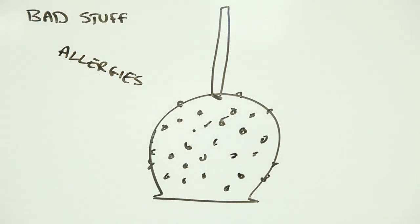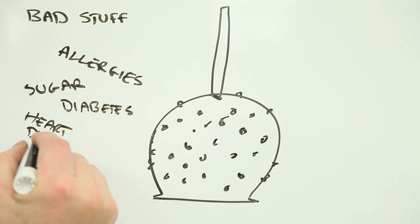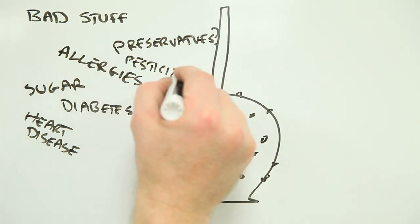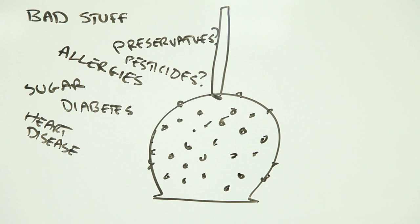The peanuts, for instance, could trigger an allergic reaction. Sugar in the caramel could increase your chances of developing diabetes or heart disease. Are the preservatives and other additives in the coating safe? Does the apple contain traces of pesticides?